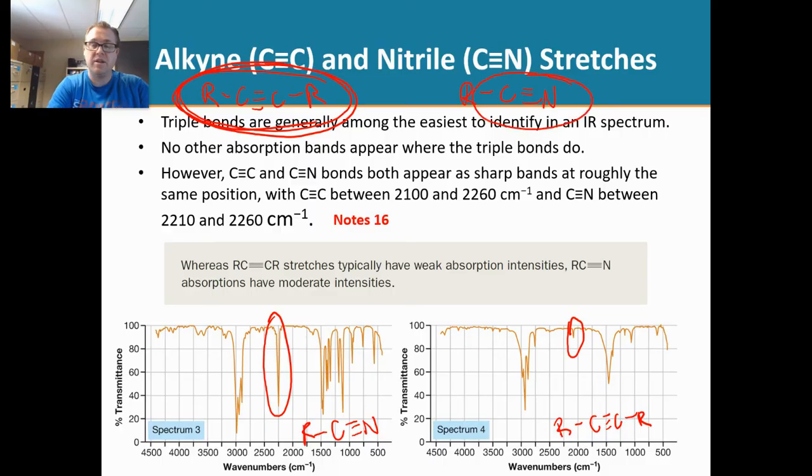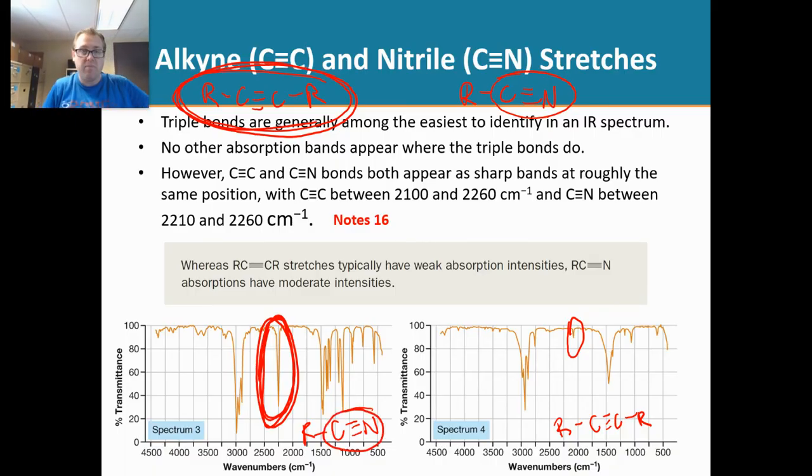But when you look at a nitrile, do you see how there's not really good symmetry? This bond right here is polarized, and the more polar a molecule is, the more intense the signal is going to be. That is why you see this really intense peak right there for the nitrile because of that polarization.